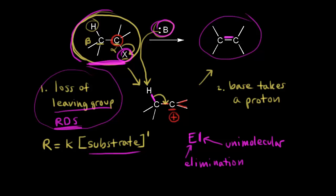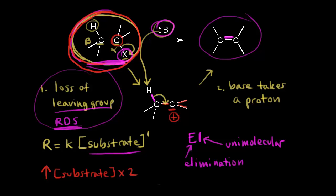If you increase the concentration of your substrate by a factor of two, you would also increase the rate of reaction by a factor of two — so it's first order with respect to the substrate. On the other hand, if you increase the concentration of your base by a factor of two, you would have no effect on the overall rate of the reaction.